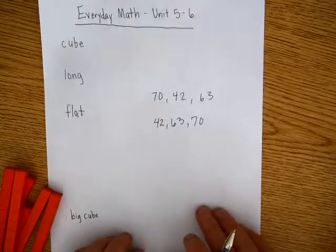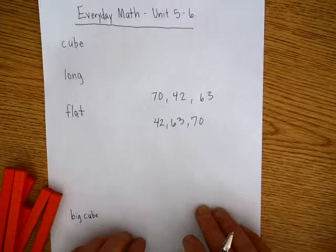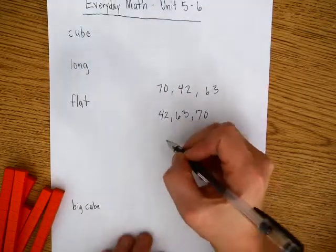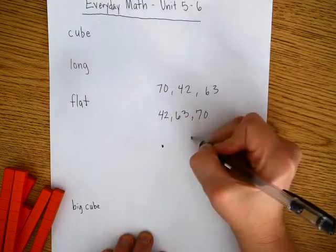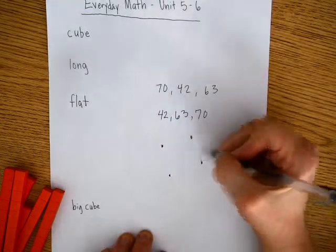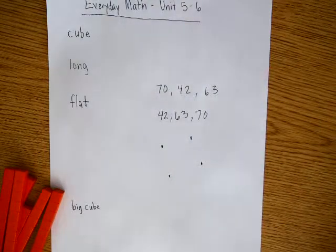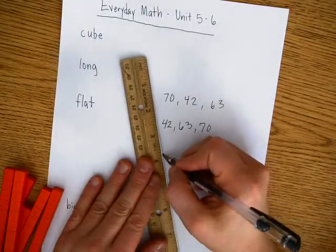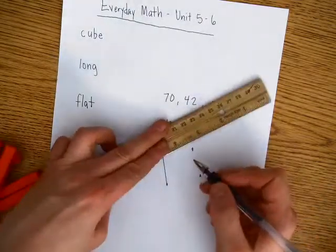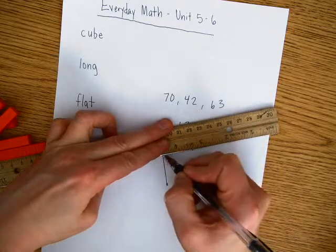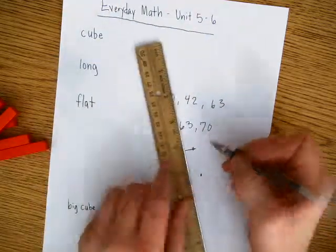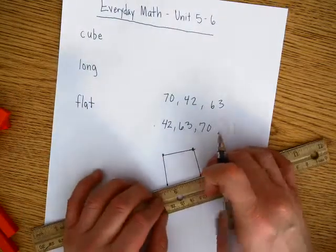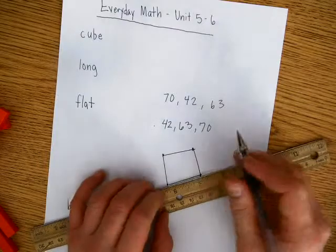Okay, the other thing that we want them to be able to do is draw points by connecting line segments. So if we have a connect point by drawing line segments, if we have some points here, we want kiddos to be able to take a ruler or another sort of straight edge and connect the points. Just like this, just like this, so that it creates a shape that's closed in, known as a polygon.